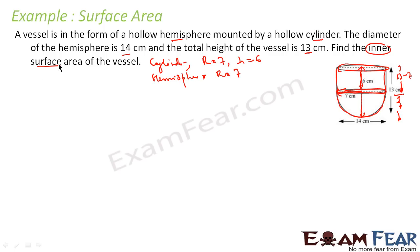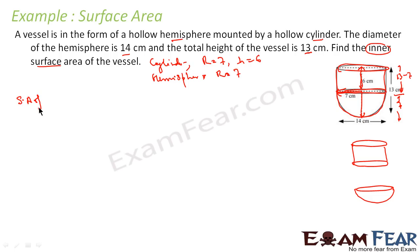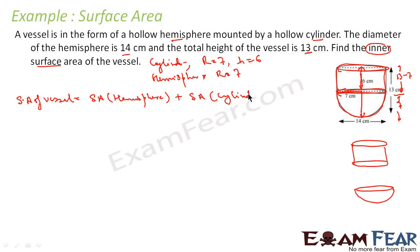As I told you, we can break this figure into a hemisphere and a cylinder. So the surface area of the vessel equals the surface area of the hemisphere plus the surface area of the cylinder. In case of surface area, if there is a common overlapping area, we subtract it. In this case, there is no overlapping area, so we don't need to subtract.